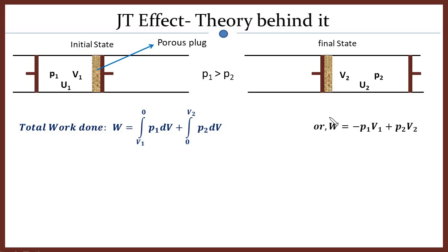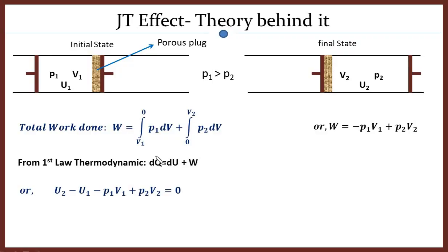From the first law of thermodynamics, dQ = dU + W. Since this process is adiabatic, dQ = 0, therefore dU = −W. Internal energy is directly related to temperature, and since dU is related to work done, depending upon the work done, dU can change, and as a result temperature can change. This is why we observe a heating or cooling effect due to this physical process.